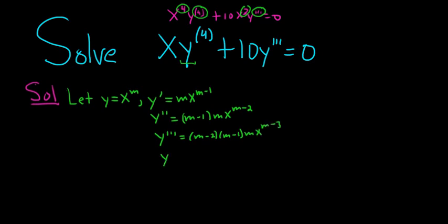Just keep subtracting one. And one more time, our fourth derivative would be m minus 3, m minus 2, m minus 1m, and x to the m minus 4.